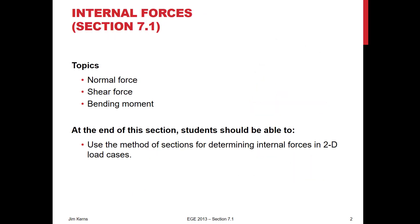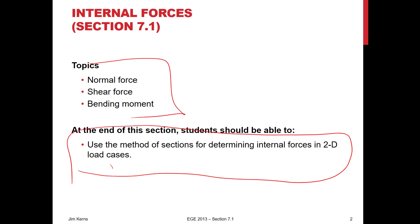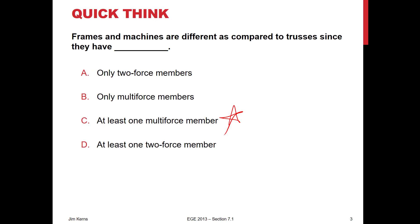Today we're going to dive inside and look at normal forces, shear forces, bending moments, and at the end of class you should be able to use the method of sections for determining internal forces in two-dimensional load cases, much like we did with the trusses method of sections. Frames and machines are different compared to trusses since trusses have only two-force members - that's one of the assumptions we made to simplify truss analysis - and all the loads are applied at the joints.